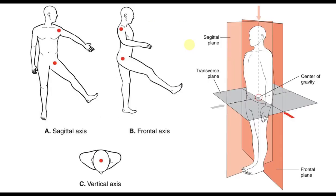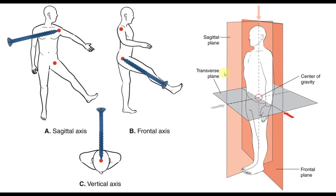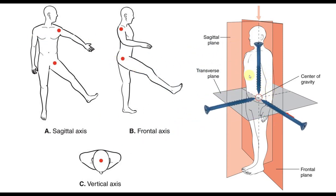Movement occurs via rotation, and to have rotation you need an axis of rotation. If I look at the frontal plane and put a pin into this point, that's my sagittal axis — it allows movement in the frontal or coronal plane. A pin through the vertical longitudinal axis allows movement in the transverse plane. A pin into the side, the frontal or medial-lateral axis, allows movement in the sagittal plane. These three axes allow movement in those three planes.